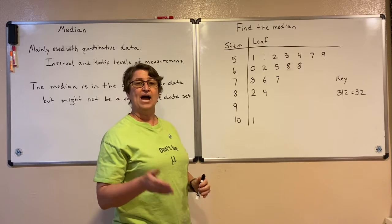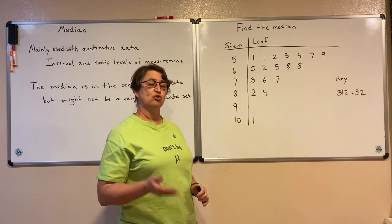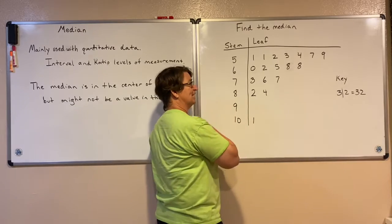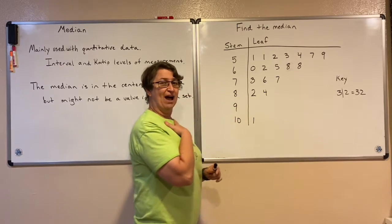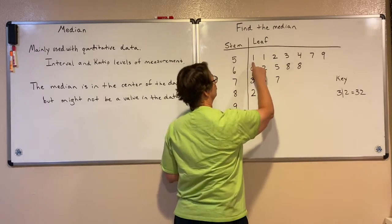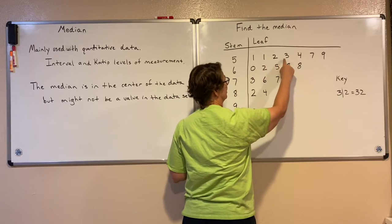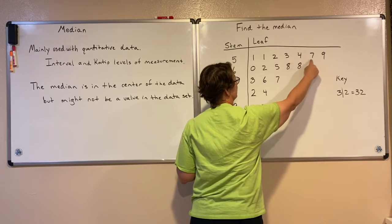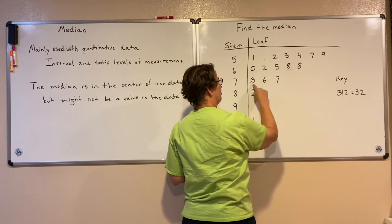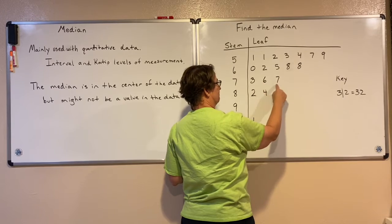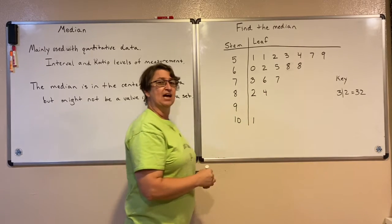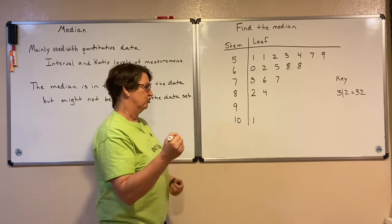Now I need to find the number straight in the middle, right in the center. So I'm going to count how many values are on this stem and leaf chart: 1, 2, 3, 4, 5, 6, 7, 8, 9, 10, 11, 12, 13, 14, 15, 16, 17, 18 data values.